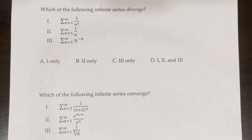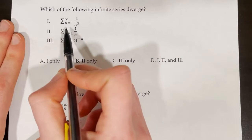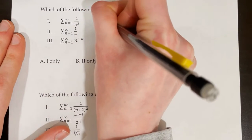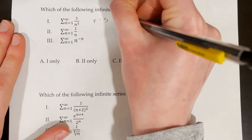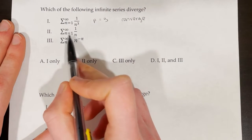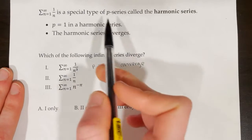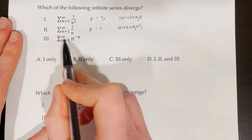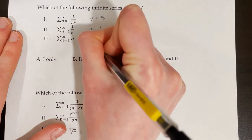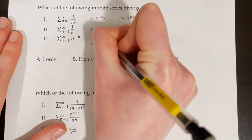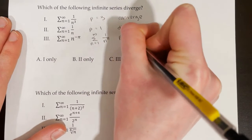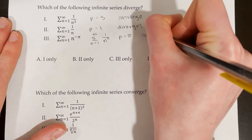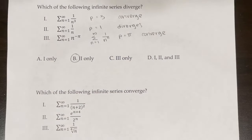Which of the following infinite series diverge? We have the series from n equals 1 to infinity of 1 over n cubed — p is equal to 3, and when p is greater than 1, the series converges. The series from n equals 1 to infinity of 1 over n is the harmonic series, and it diverges because p equals 1. The series from n equals 1 to infinity of n to the power of negative pi equals 1 over n to the power of pi, so p equals pi, which is greater than 1, meaning it converges. So only number 2 diverges.